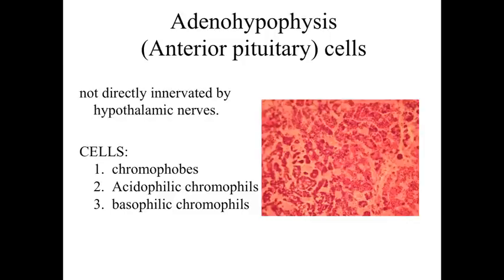We're going to focus first on the adenohypophysis, the anterior pituitary cells. The first thing to keep in mind is that we're looking at cells that are not directly innervated by cells from the nervous system, so we don't have an innervation coming from the hypothalamus into the anterior pituitary. We're going to have three distinct types of cells. The first are going to be chromophobes — chromo, think about color — so chromophobes are color-fearing cells, essentially pale cells. And then we're going to have two categories of chromophils: acidophilic chromophils and basophilic chromophils.